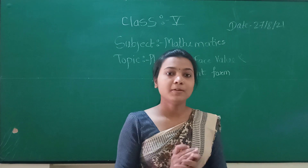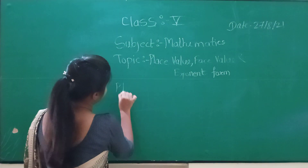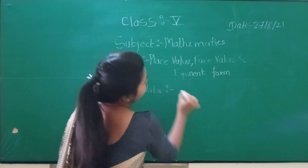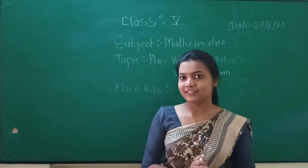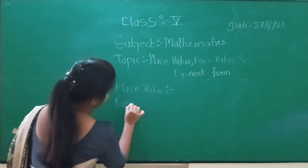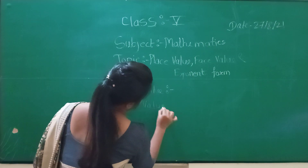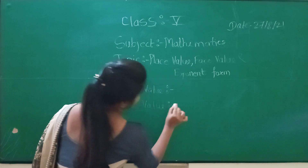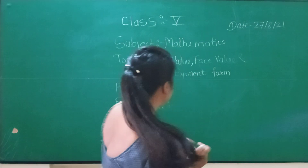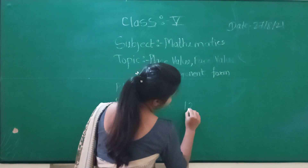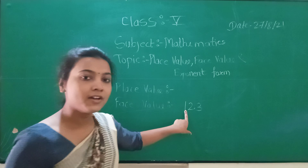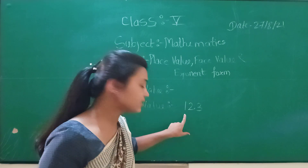First, let's see the place value. The place value is the value of each digit in the number. The place value is the first digit in the number. For example, 1123 — the place value of this number is 1, because 1 is the first digit in this number.